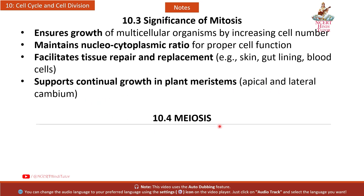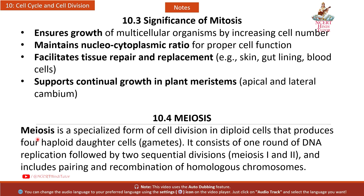10.4 Meiosis: Meiosis is a specialized form of cell division in diploid cells that produces four haploid daughter cells called gametes. It consists of one round of DNA replication followed by two sequential divisions — meiosis I and meiosis II — and includes pairing and recombination of homologous chromosomes.